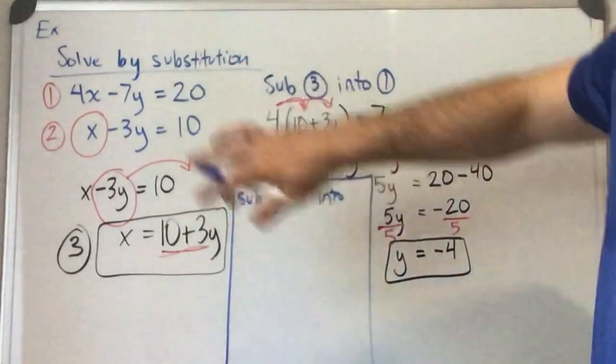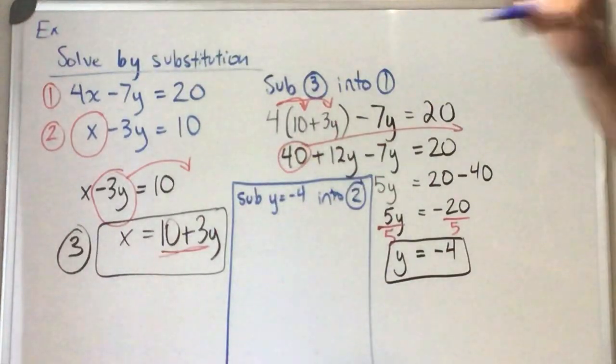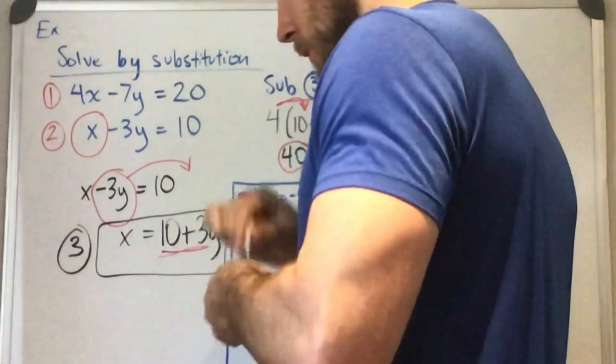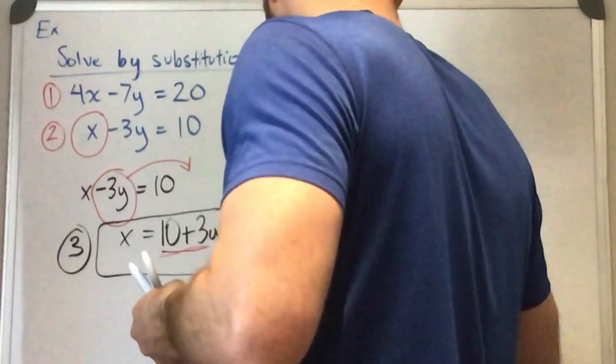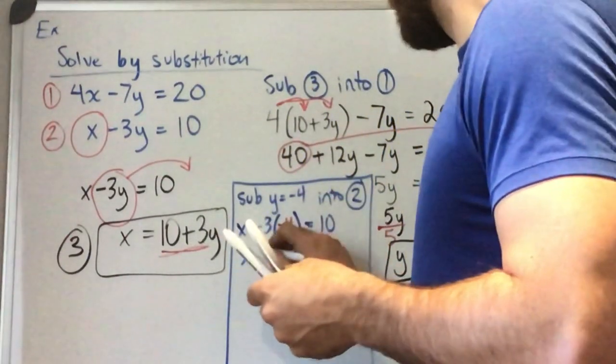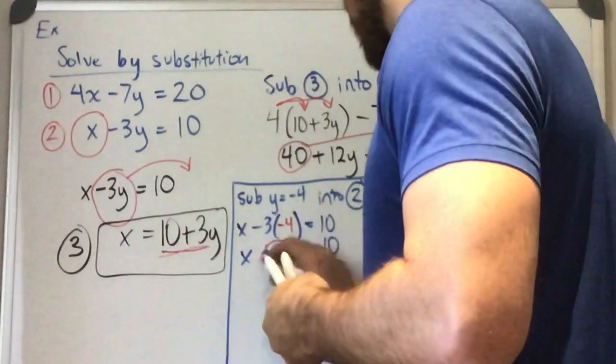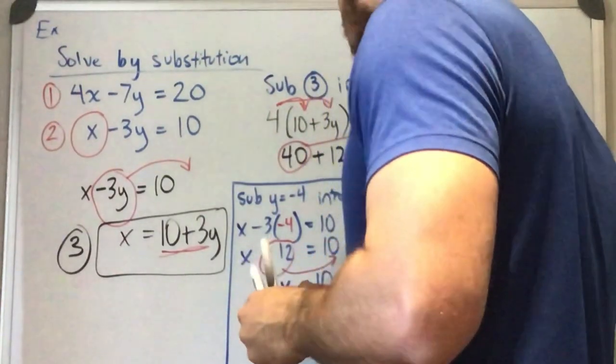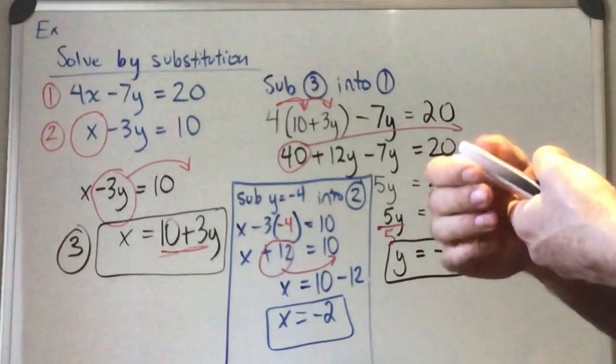You know what? You want to go back to one of our original equations. I like this one. You can choose the other one if you want, but I kind of like that second one. It just looks a little bit easier to work with. So now we have x minus 3 times negative 4 equals 10. So we have x minus 3 times negative 4 would be a plus 12. Now I want to move that over to the other side because we're solving an equation again. We've got x equals 10 minus 12. Okay, we solved that equation to get x equals negative 2.